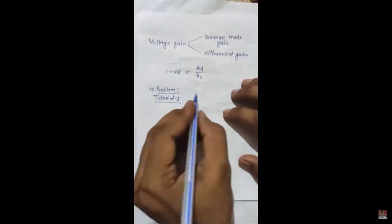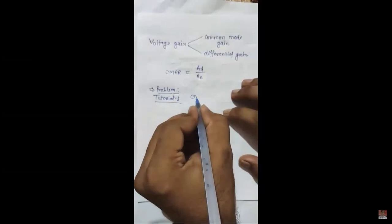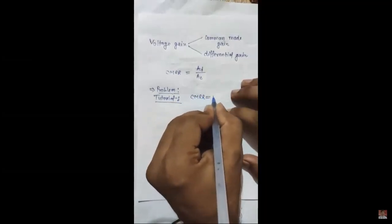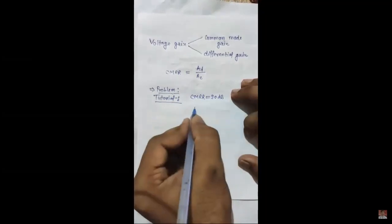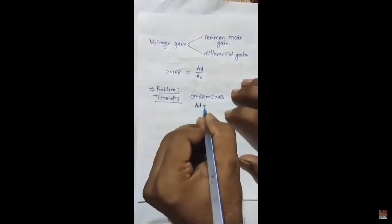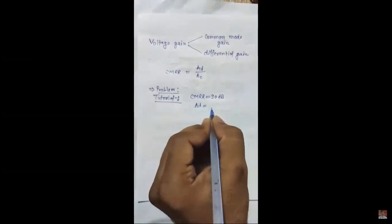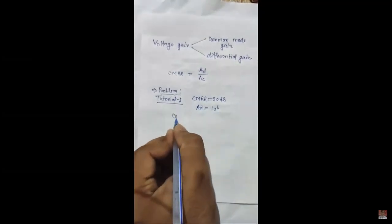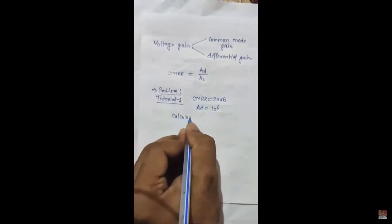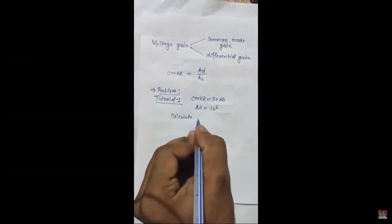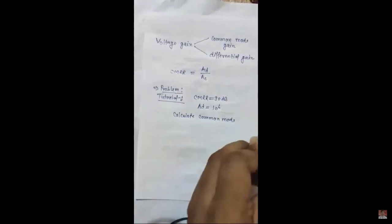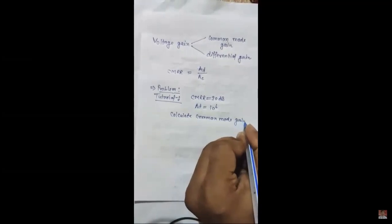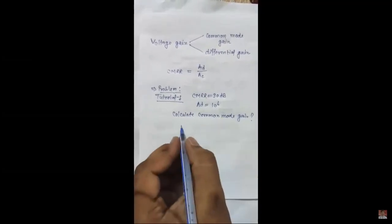The ideal value of CMRR is infinite, and practically it should be as high as possible. Let us consider one tutorial problem. In this problem, we have an operational amplifier which has a common mode rejection ratio of 90 dB and a differential gain of 10 to the power 6, and you are required to calculate the common mode gain.